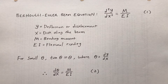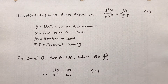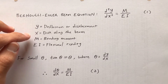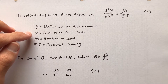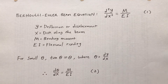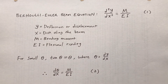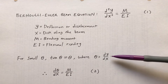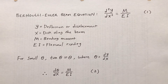If you put a load on a beam, how much does it deflect? We have the Bernoulli-Euler beam equation, equation one. Y is the amount of deflection, also known as displacement. X is a distance along the beam, measured from the left-hand side. M is bending moment, E is modulus of elasticity, I is moment of inertia, and E times I is flexural rigidity. For small angle theta, tangent theta is approximately equal to theta, where theta is the slope of the beam. So if theta equals dy/dx, we can rewrite equation one as equation two. M over EI is sometimes called curvature.